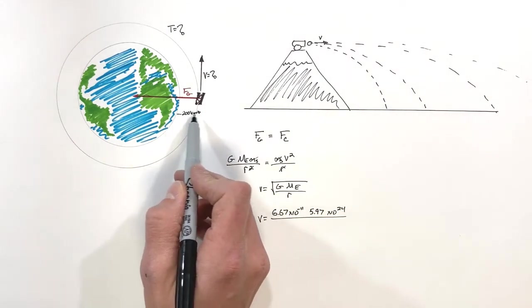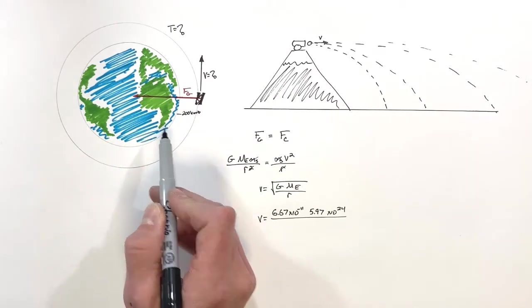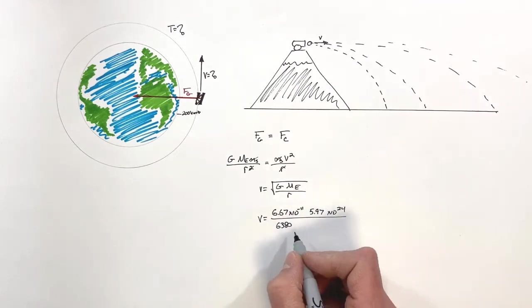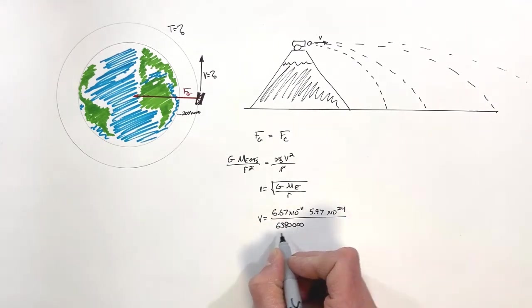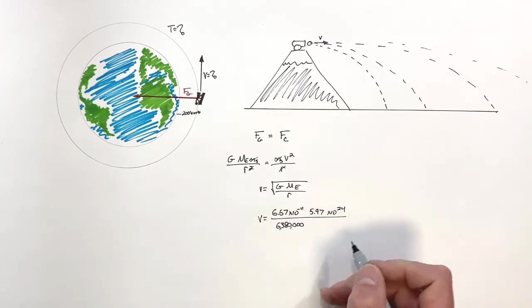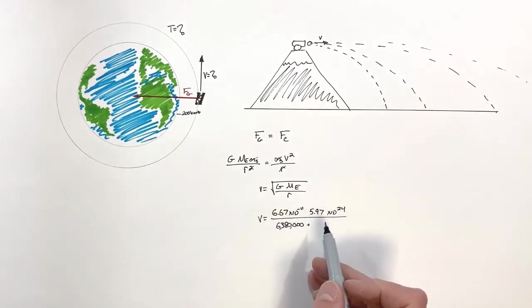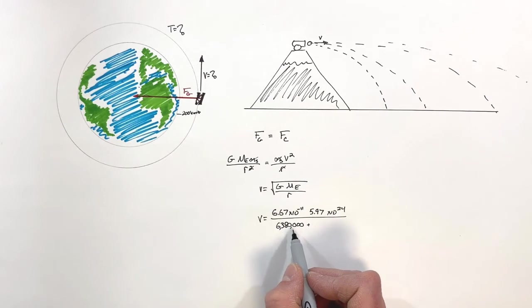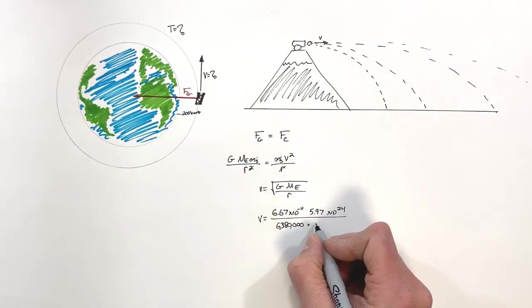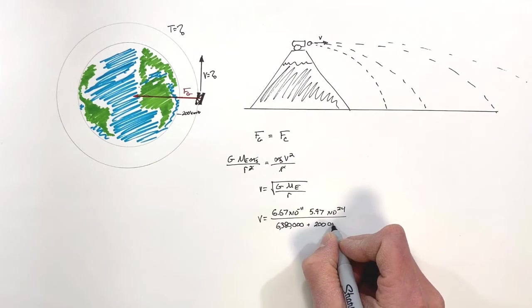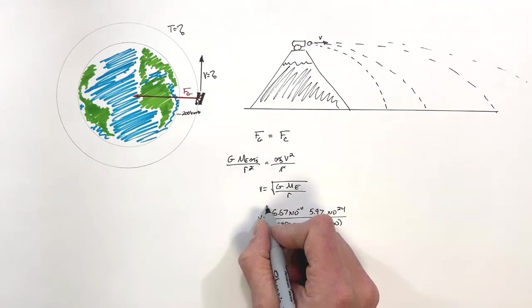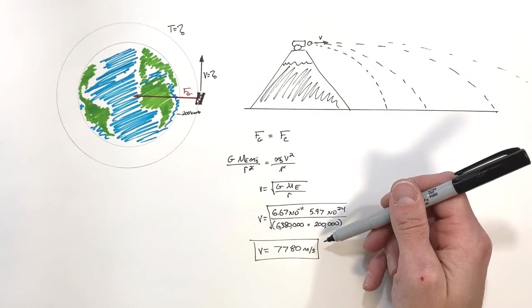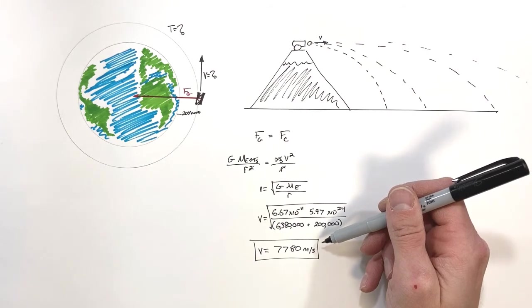We must add the 200 kilometers to the radius of the Earth itself, which is 6,380 kilometers or 6,380,000 meters — we always work in meters, kilograms, and seconds. So the total radius is 6,380,000 + 200,000 meters. The resulting velocity is 7,780 meters per second, just under 8 kilometers per second — extremely fast, but achievable.